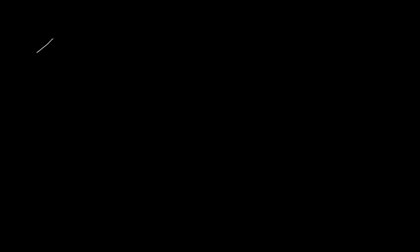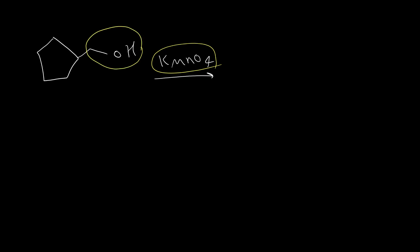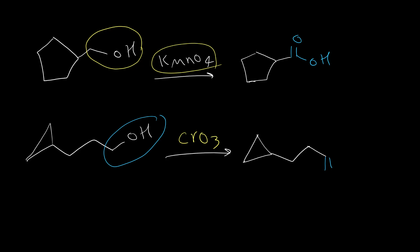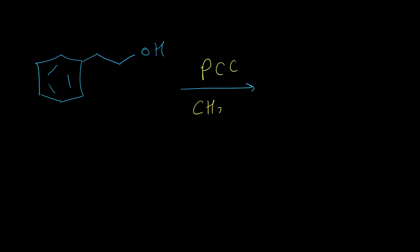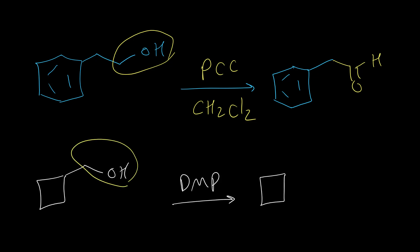Let's look at some examples for oxidation of primary alcohol. In the first example, the oxidizing reagent is not PCC or DMP, so CH2OH should convert to the carboxylic acid functional group. In another example using CrO3, again we convert the primary alcohol to carboxylic acid. If we oxidize with PCC in dichloromethane, PCC oxidizes primary alcohol to aldehyde, so CH2OH converts to the aldehyde functional group. The same applies with DMP — we convert CH2OH to the aldehyde functional group.